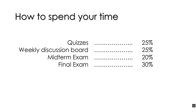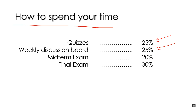Here are the weights of the different assignments for the course — I label this 'how to spend your time,' that is, what to devote your time to in this course. You see that the quizzes, there's at least one quiz a week, and there are 14 weeks — they account in total for 25% of your grade. The weekly discussion board, there's usually about one per week, but we spread them out because students prefer to have longer time to respond. So the amount of time you spend on quizzes should be the same amount of time you spend on the discussion boards.